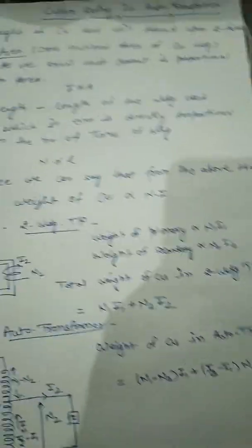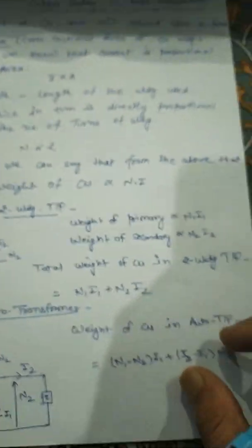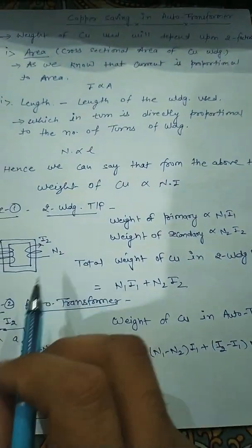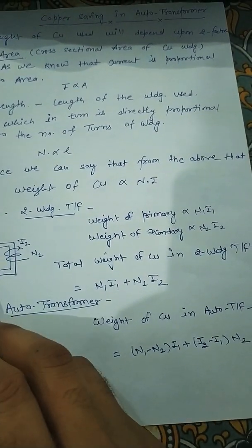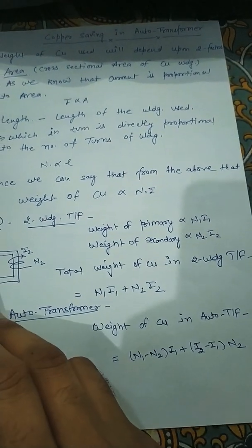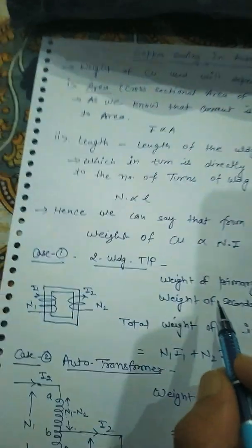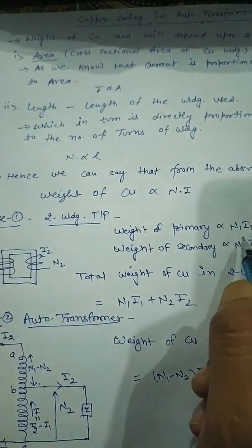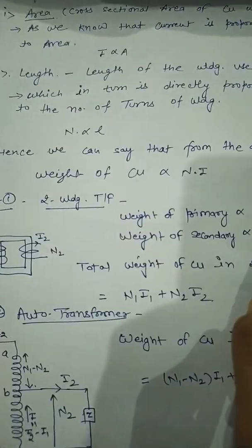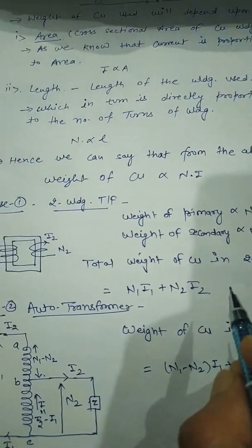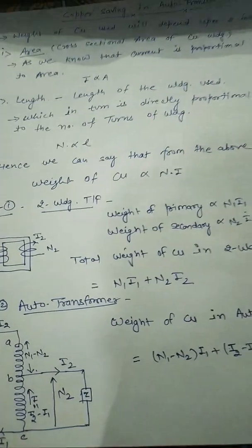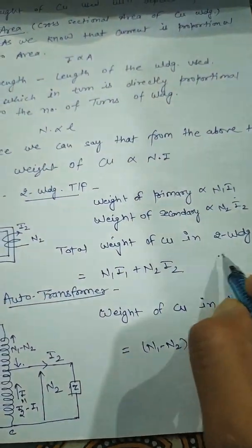Let's take this case by case. First, we take the two-winding transformer. As you can see in the diagram, this is the primary winding with n1 turns and current i1, and this is the secondary winding with n2 turns and current i2. The weight of the primary is proportional to n1·i1, and the weight of the secondary is proportional to n2·i2. So the total weight of the two-winding transformer equals n1·i1 + n2·i2.